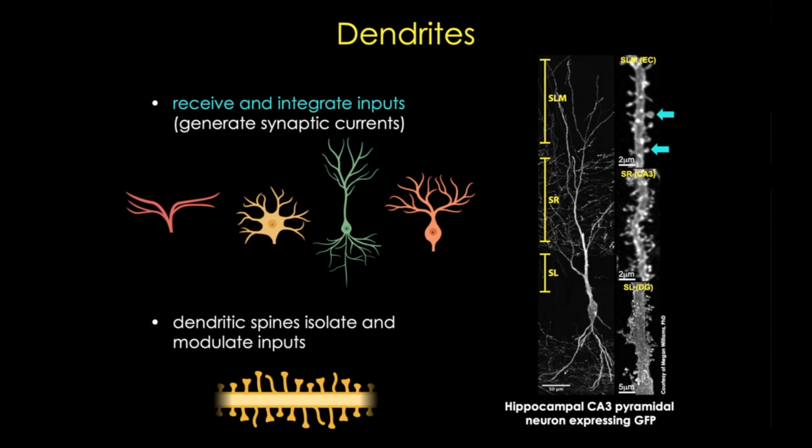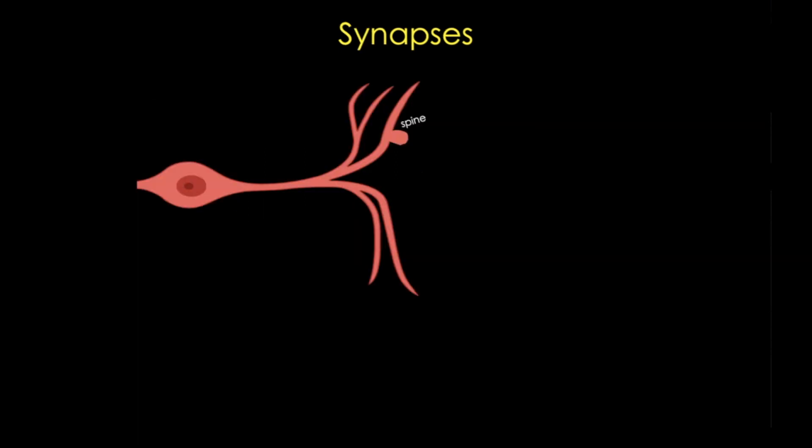Now I've alluded to the structure known as the synapse, which is that specialized signaling contact between the axon terminal and its target, and there are multiple synaptic targets.